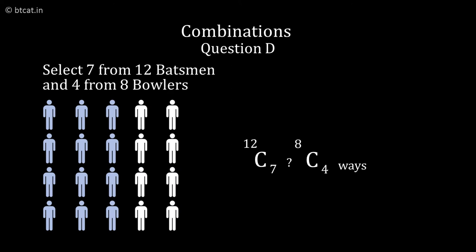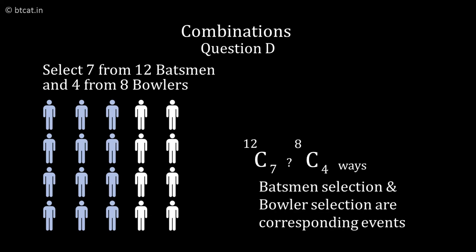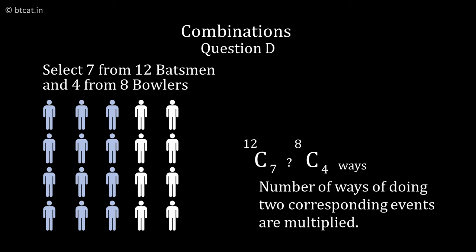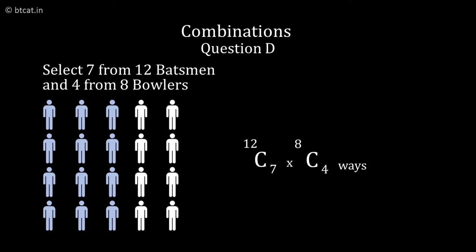Now, the billion dollar question is: will a plus sign come in between or a multiplication sign come in between? And that is the beauty, or rather the main principle, of permutations and combinations. Here it is corresponding to so many ways of batsman selection and so many ways of bowler selection. It is a case of corresponding events. If a work can be done in m ways and the subsequent work can be done in n ways, both works together will always be done in m×n ways. Fundamental principle of counting. Therefore, the multiplication sign will come in between. The net answer will become 12C7 × 8C4.